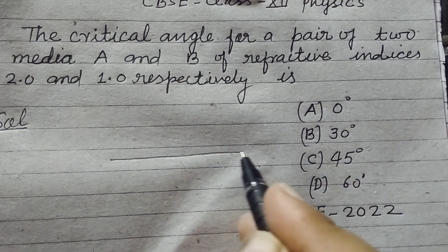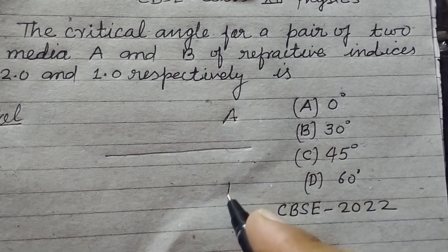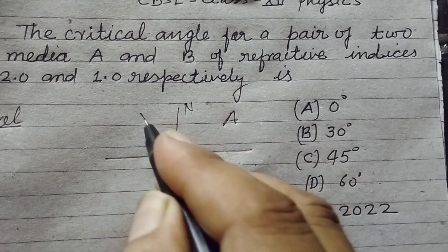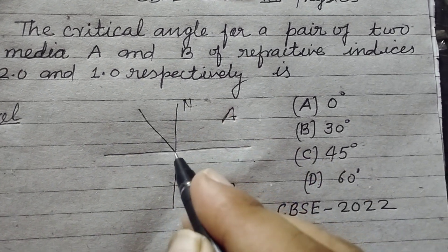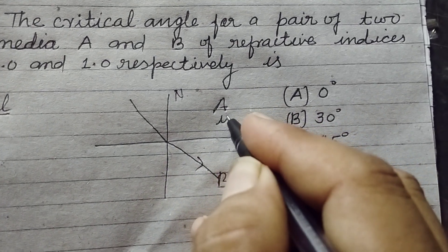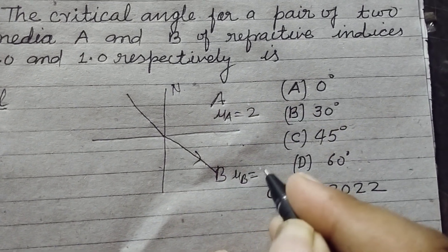Here light is going from medium A to medium B. This is the normal, this is the incident ray, and this is the refracted ray. Here, mu A is given to us as 2 and mu B is given to us as 1.